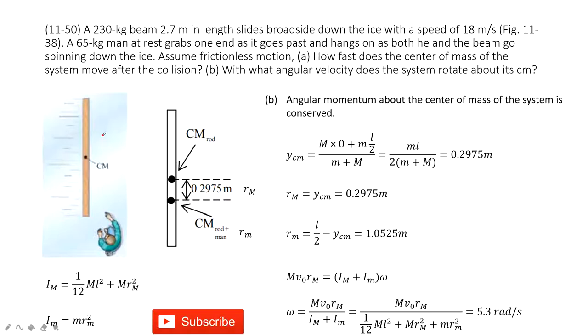For angular momentum conservation, we need to find initial and final angular momentum. First, for this rotation, we need to find the rotation axis. Initially it moves to the right in linear motion, then it begins to rotate. The person just grabs one end.